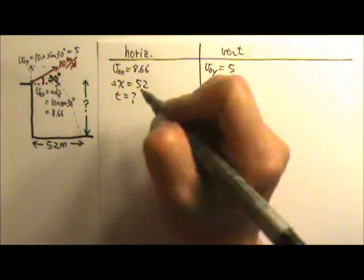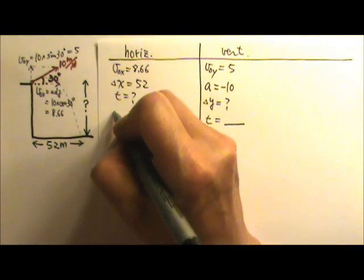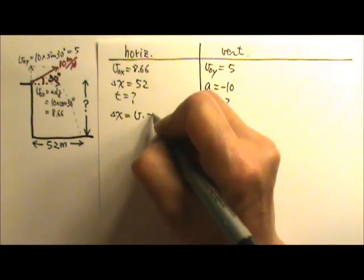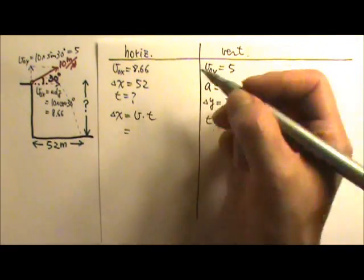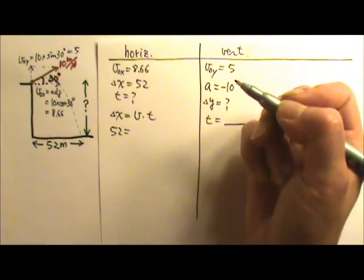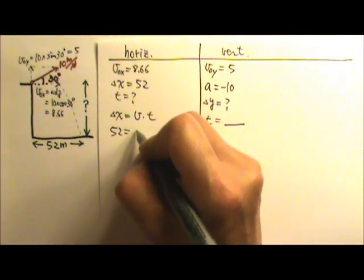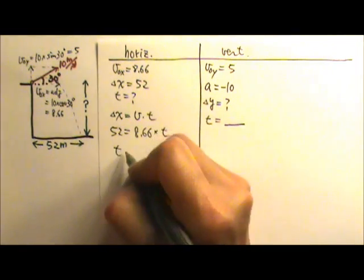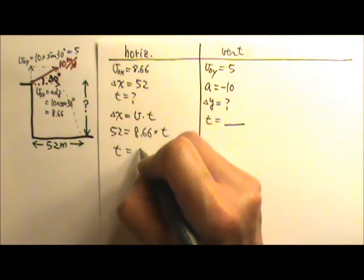So let's go find the time on the horizontal side. On the horizontal side, the only equation we use is delta X equals V times T. So delta X is 52, and velocity is 8.66. This will give you the time that is 6 seconds.